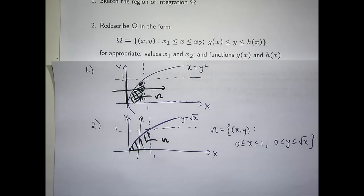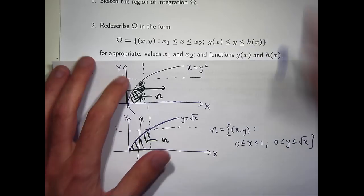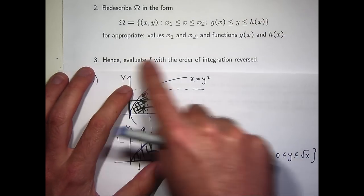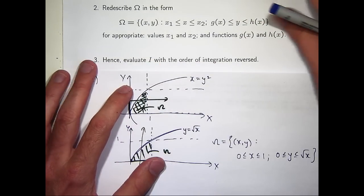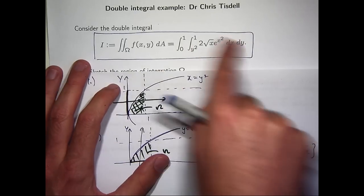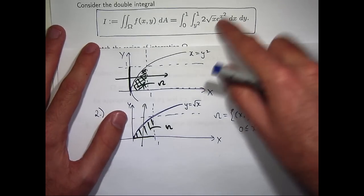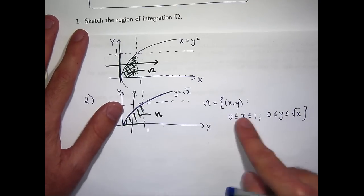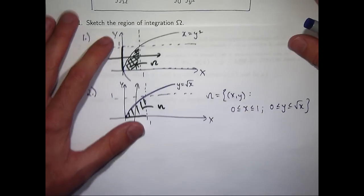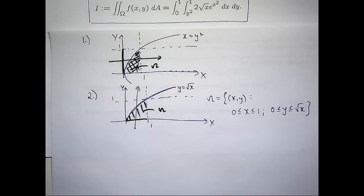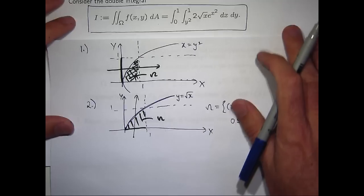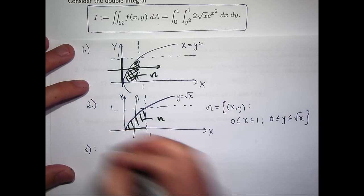So now what I can do is evaluate i with the order of integration reversed. So this original form is too hard to integrate. So let's reverse the order, use my new description, and then I can actually solve the problem.